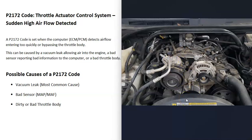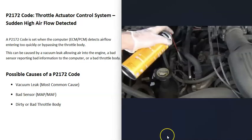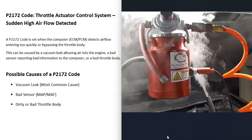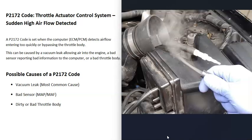Sometimes you can hear the vacuum leak — it'll be noisy. Some mechanics will start up the engine and spray something like WD-40 or throttle body cleaner around areas where they suspect the leak is. If the engine idle changes up or down, they know that's where the leak is. Another method is to use a smoke machine, where you feed smoke into the intake and wherever the smoke comes out, you've found the leak.